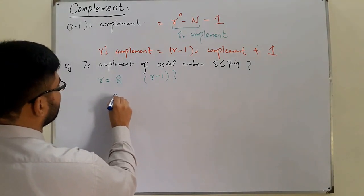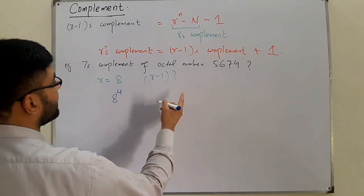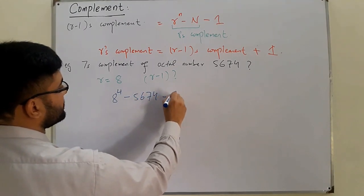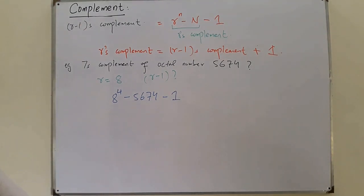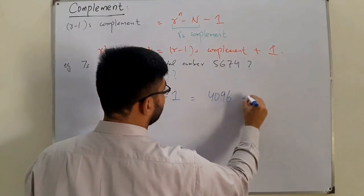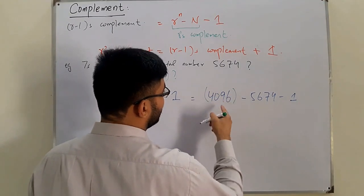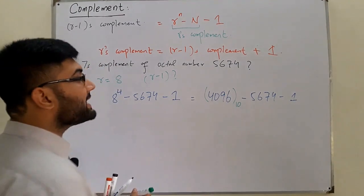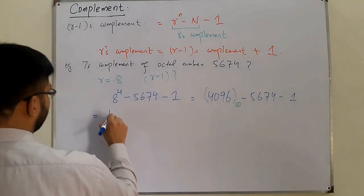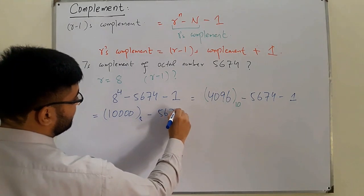R is 8, n (number of digits) is 4, so we compute 8 to the power 4 minus 5674 minus 1. Now 8 to the power 4 is 4096 in base 10, which in base 8 is 10000. So we have 10000 (base 8) minus 5674 minus 1.